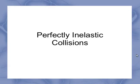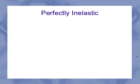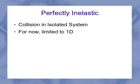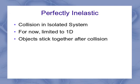So now let's look a little bit closer at the case for perfectly inelastic collisions. In a perfectly inelastic collision, we're still dealing with a collision in an isolated system. And for now, we're going to limit it to just one dimension. Now what makes something perfectly inelastic is that the objects stick together after the collision. And that means they've got the same final velocity. If they're stuck together, they have to move at the same speed.